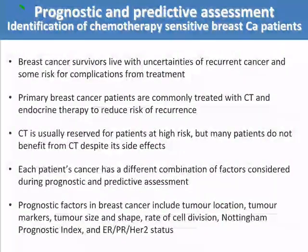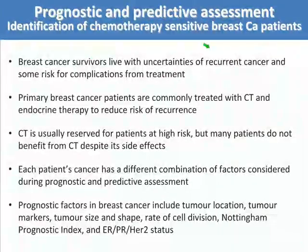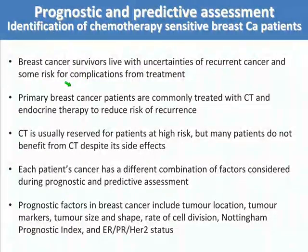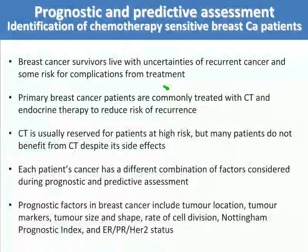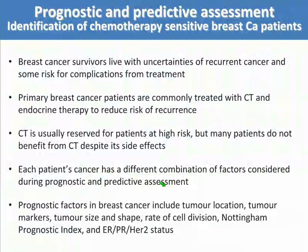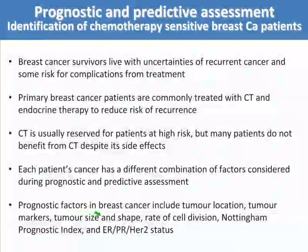So that was cancer detection. The next question is: can we use these proteins for prognostic and predictive assessment of cancer patients? The example I would like to choose here is the identification of chemotherapy-sensitive breast cancer patients. As you know, breast cancer survivors live with uncertainties of recurrent cancer and some risk for complications from treatment. Primary breast cancer patients are commonly treated with chemotherapy and hormonal therapy to reduce the risk of recurrence, but many patients do not actually benefit from chemotherapy despite its known side effects.